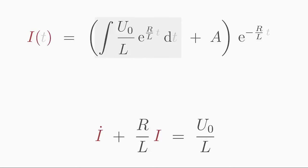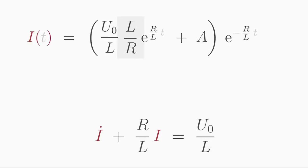Now we have to calculate the integral. U0 over L is a constant and can be placed in front of the integral. And when integrating the exponential function the exponential function is preserved. Only L over R is added as a factor in front of the exponential function.